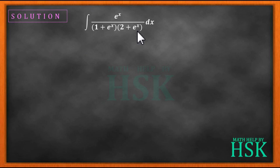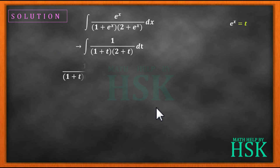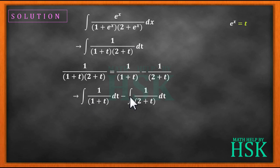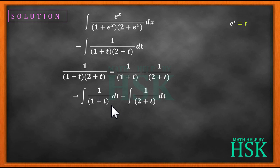We started with the original integral, substituted eˣ = t, and obtained the partial fraction decomposition. So the integral becomes ∫ 1/(1 + t) dt − ∫ 1/(2 + t) dt. Since the integral of 1/x is log x, these integrate to log(1 + t) and log(2 + t) respectively.